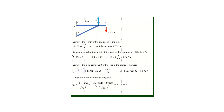We want to compute the Euler buckling load in the diagonal member and compare that to the ANSYS computed buckling load. To do the equation-based calculations, we first compute the length of the diagonal member, and it turns out to be 1.732 meters.